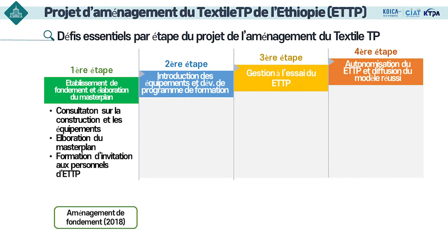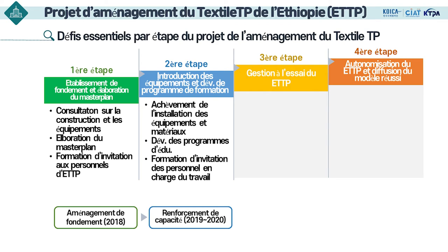Les tâches principales de chaque étape du projet peuvent être considérées en quatre étapes. La première année est l'étape de la formation de la fondation : jeter les bases nécessaires, établir un masterplan global et mener la consultation sur la construction et les équipements suivie d'une formation d'invitation. En deuxième et troisième année, c'est l'étape du renforcement des capacités, où l'équipement est principalement introduit et des programmes de formation sont élaborés. Nous transportons le matériel, terminons l'installation et créons tous les programmes de formation et les manuels avec traduction.